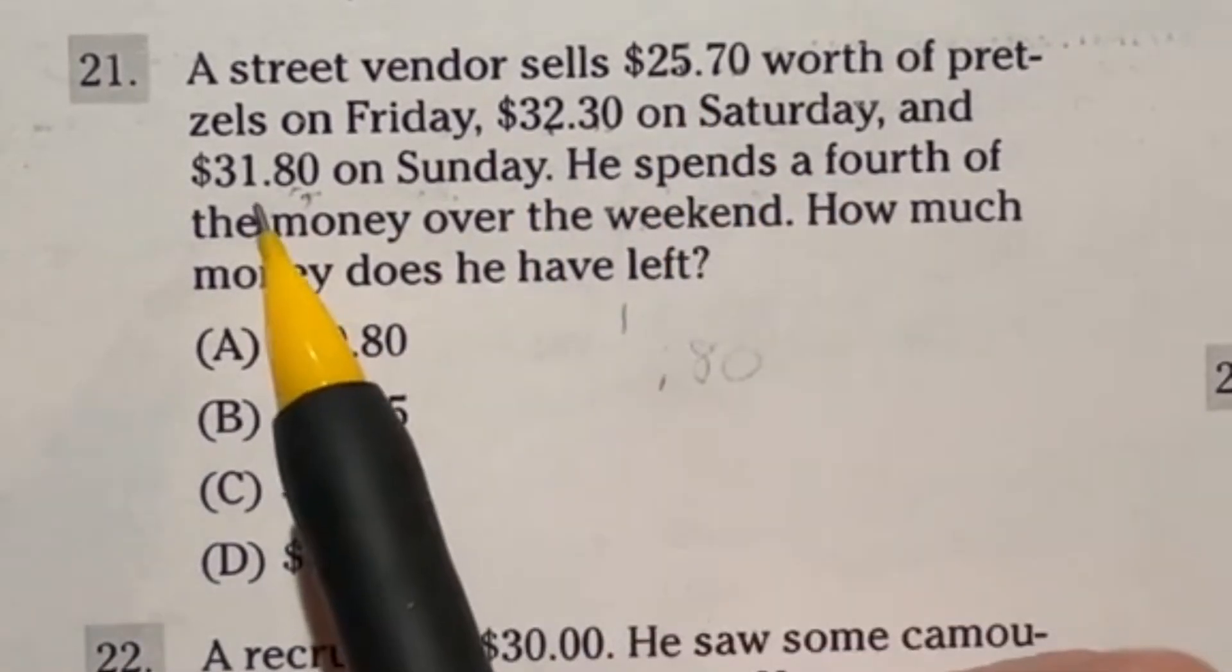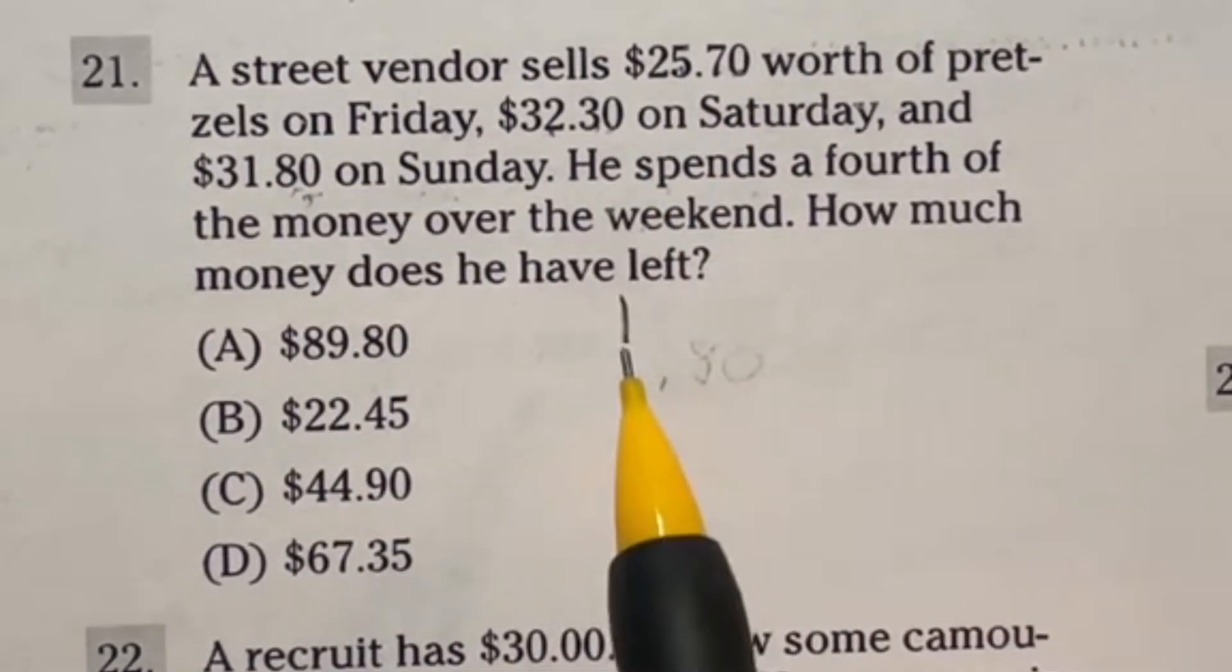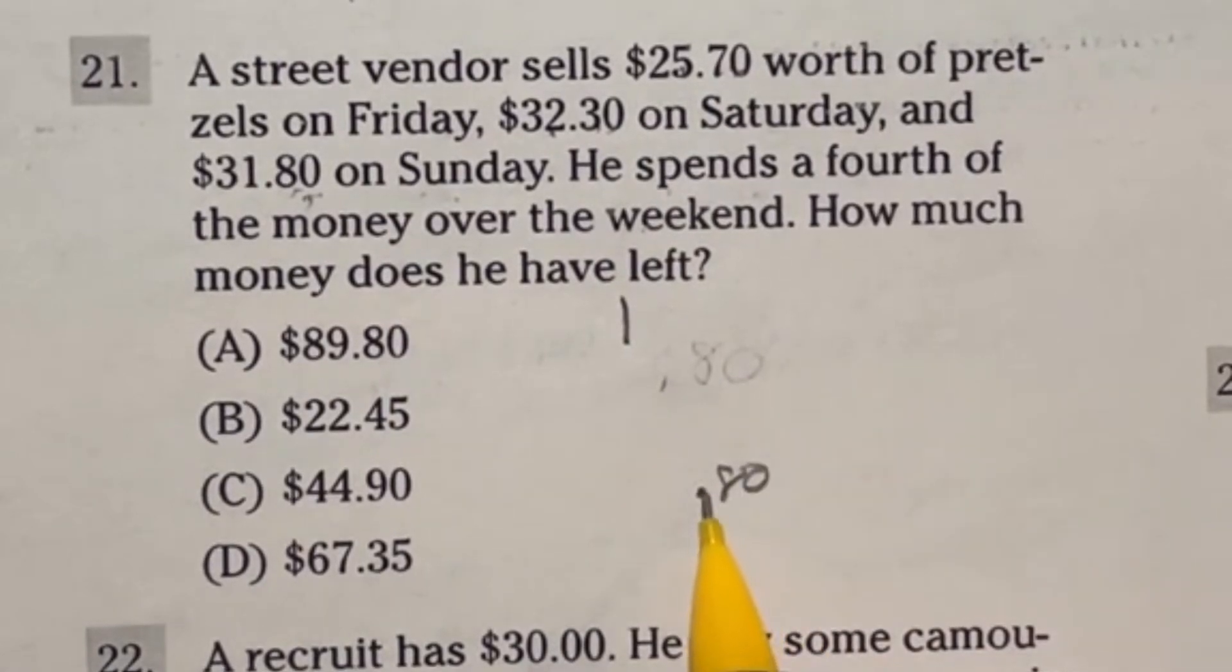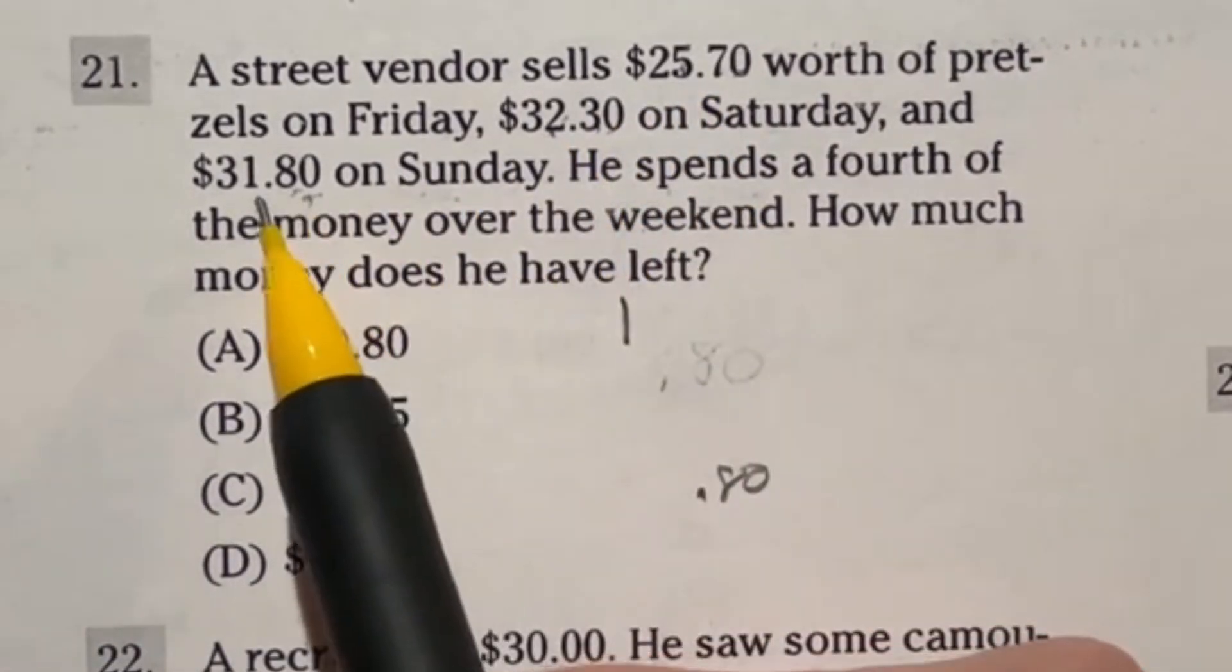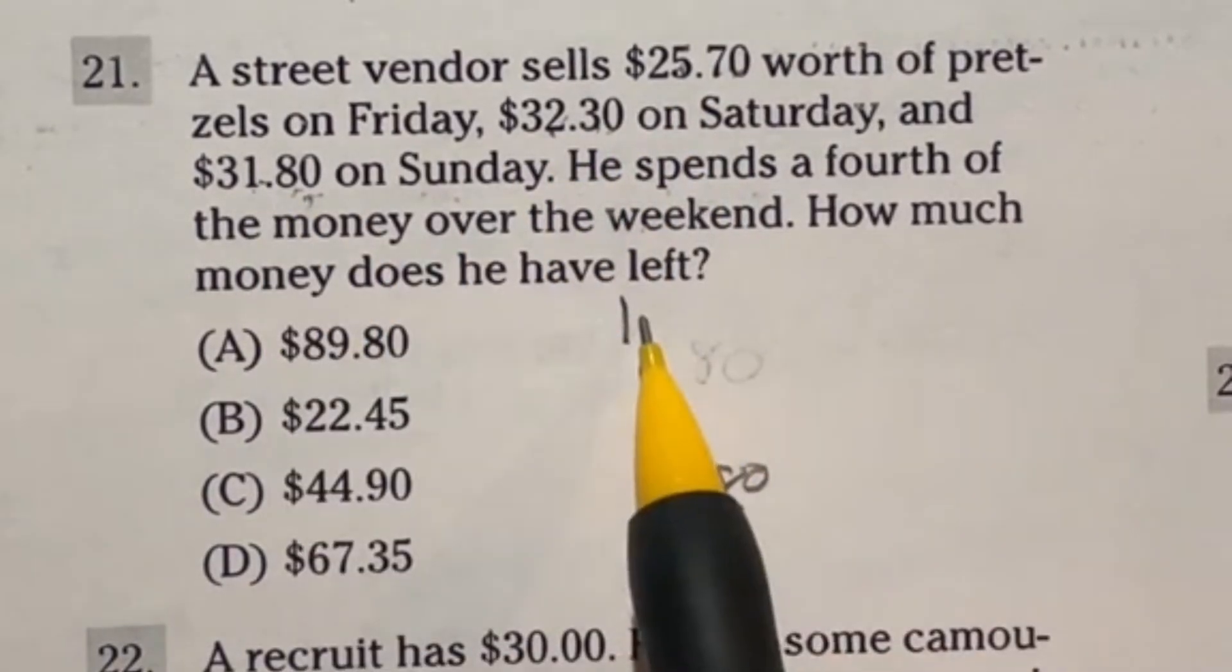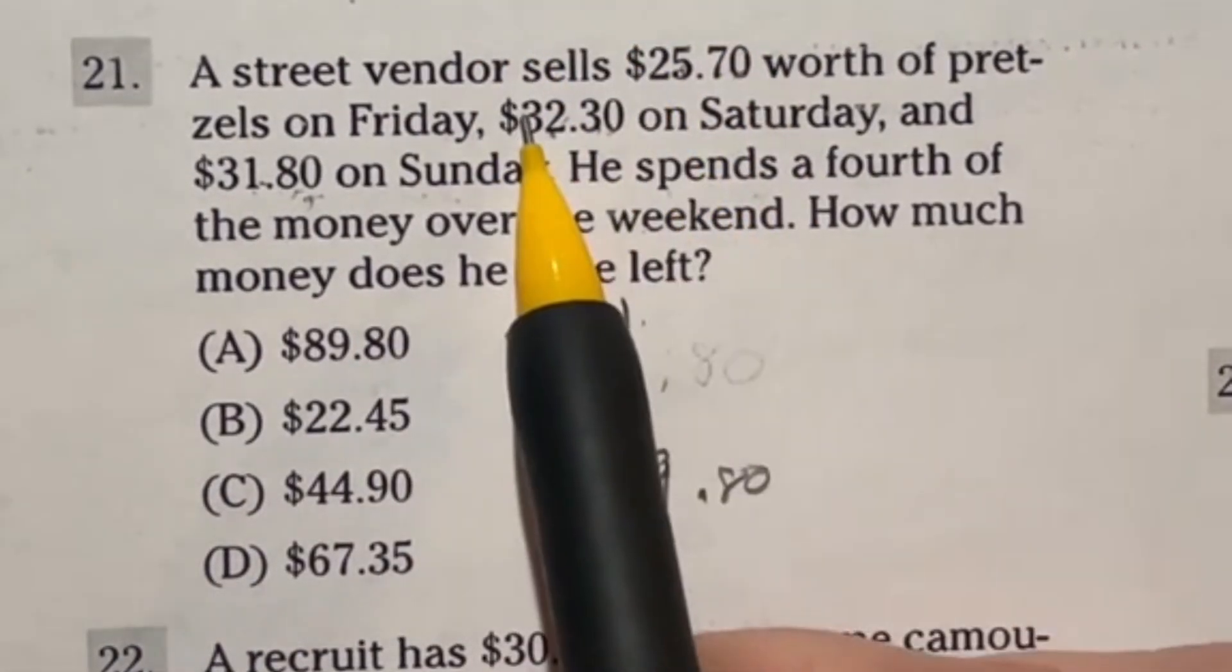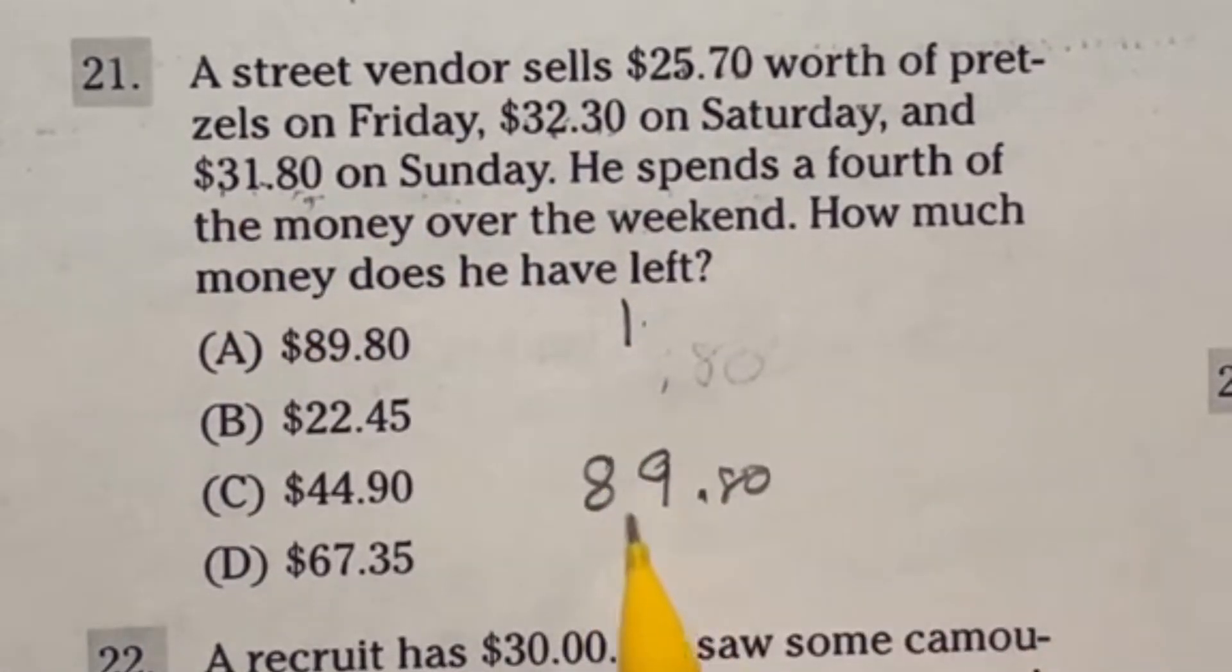So let's start off here by adding these three together. This 70 cents and 30 cents is going to give me one dollar. So I still have that 80 cents left over in my final answer there. Then we have the dollars. So we got 5 plus 2 plus 1. So 5 and 2 is 7 plus another 1 is 8 plus that 1 is going to give me 9. Then we're going to have the 2 plus 3 is 5 plus another 3 is going to give me 8.